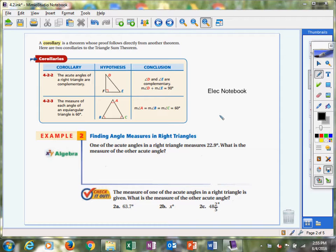It's a theorem whose proof follows directly from another theorem. The two corollaries we're getting ready to talk about directly hook into triangle sum theorem. We know the triangle sum theorem is the theorem that says all three angles in a triangle add up to equal 180 degrees. These corollaries are offshoots of the triangle sum theorem.